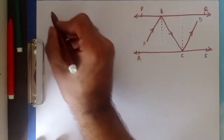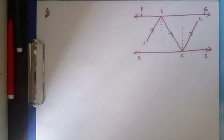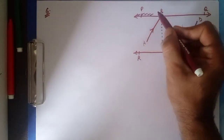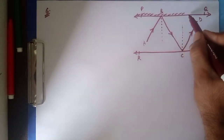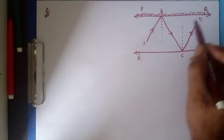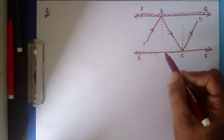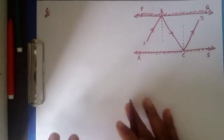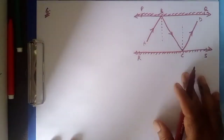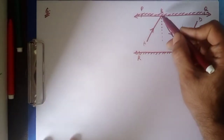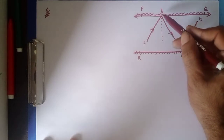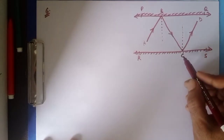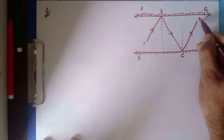In question number six, there are two mirrors PQ and RS. This is how we show a mirror. These two mirrors are parallel. A ray AB is incident on the mirror PQ at B. After reflection it goes in the direction BC and is incident on mirror RS, and after reflection from RS it goes in the direction CD.